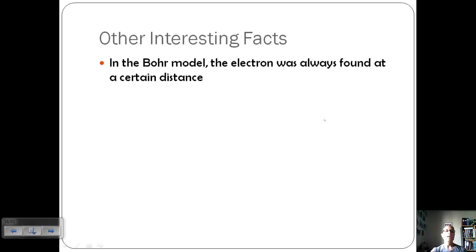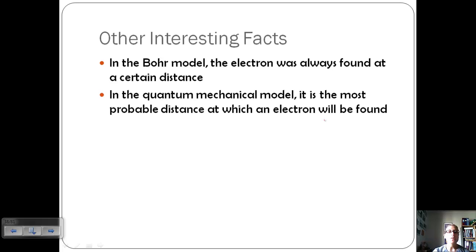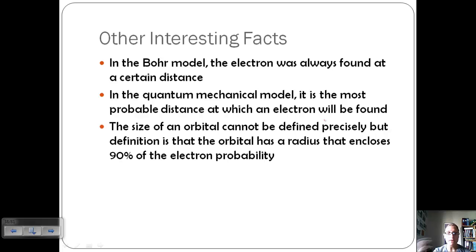Let's look at some other interesting facts. In the Bohr model, the electron was always found at a certain distance. Remember, we had those specific orbitals that the electron could be in. In the quantum mechanical model, it's the most probable distance at which the electron will be found. So remember, we're still incorporating probability here. We're saying most likely it's within this location or this area. So the size of an orbital cannot be defined precisely.